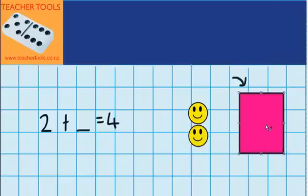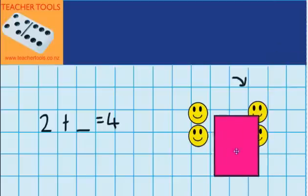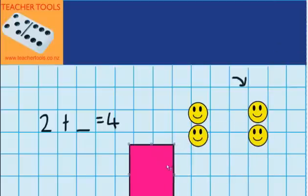Well, hopefully you've got an answer, so let's move this rectangle and find out if you're right. You can see 2 plus 2 equals 4. So, in this gap I'm going to write 2.